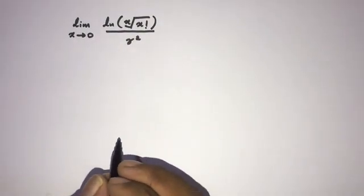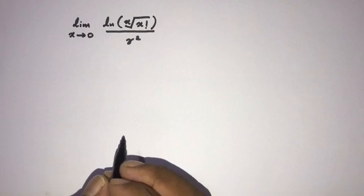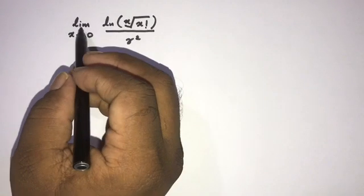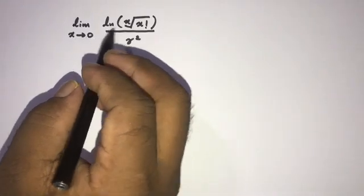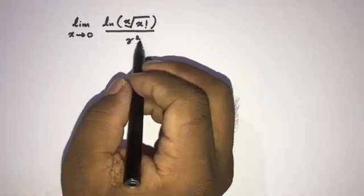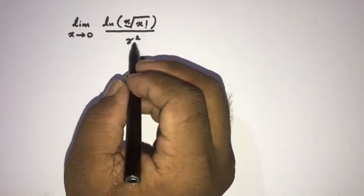Hi, welcome to Mathematics. In my channel today, we are going to solve another interesting limit question. The question is: limit as x approaches 0 of natural log of square root of x factorial over gamma squared, where gamma is a Euler-Mascheroni constant.